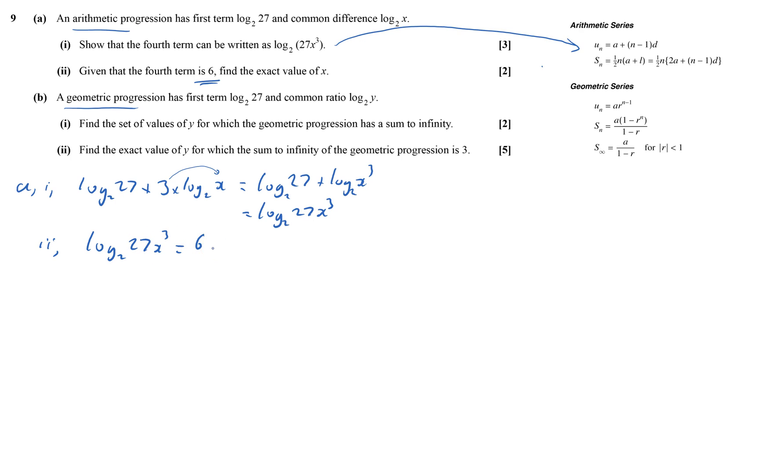So to do this I need to get rid of the log, so I need to vaporize that. So I raise it to the power of 2. So now I'll vaporize that, just leaving me 27x cubed equals 2 to the power of 6, which is 64.